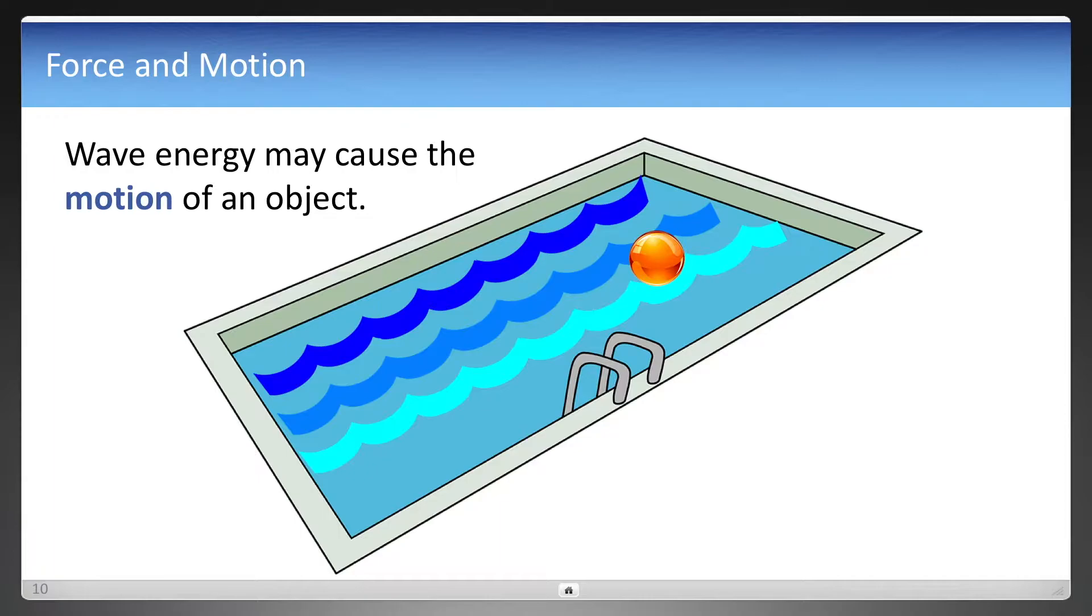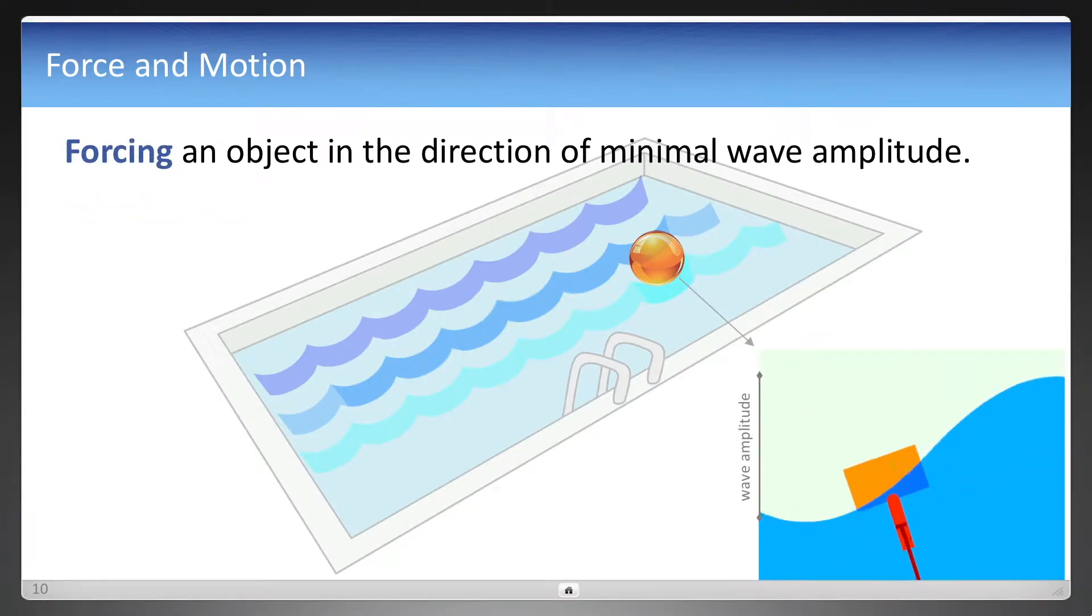And that energy can be useful, right? It might cause the motion of an object. Let's assume it's a beach ball on the surface, and this is what it would look like. It's going to move to the point of minimum amplitude. The minimum wave amplitude is the height, so it's going to go lower in height, at least in a transverse wave.